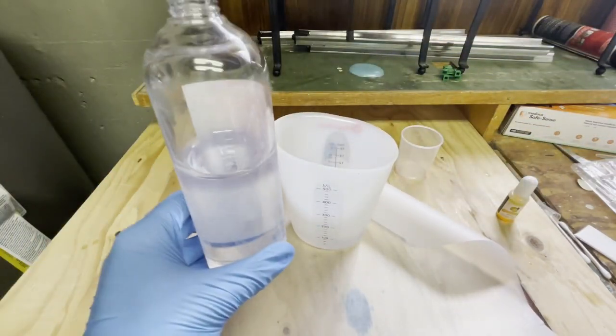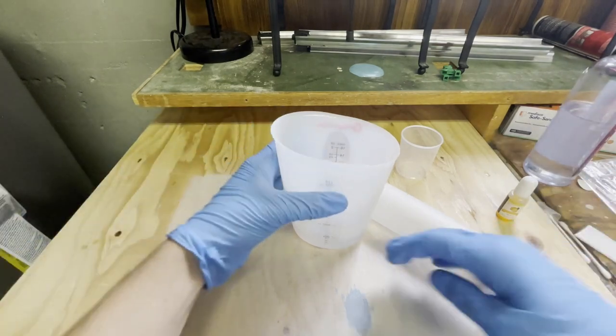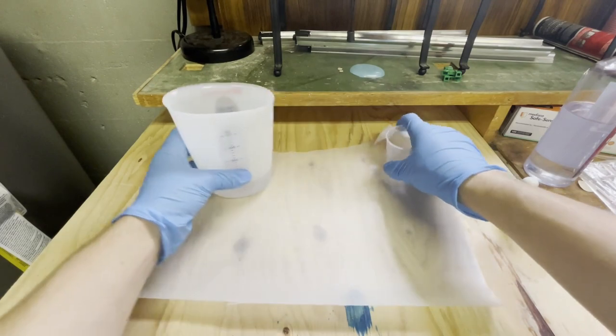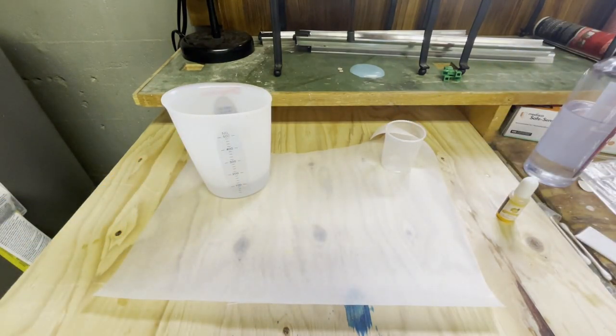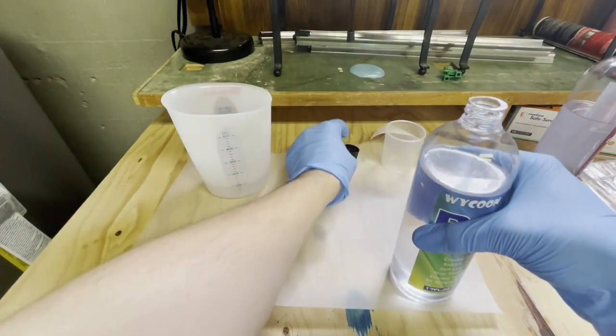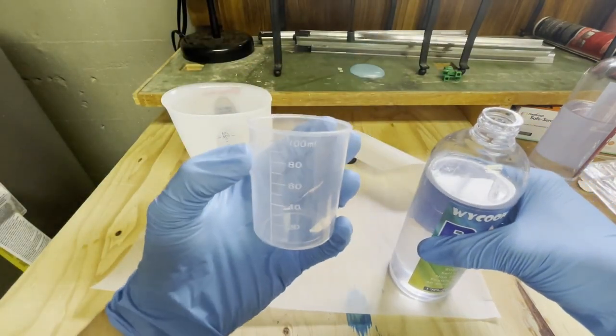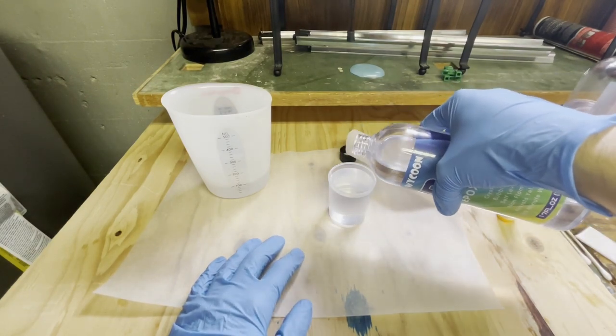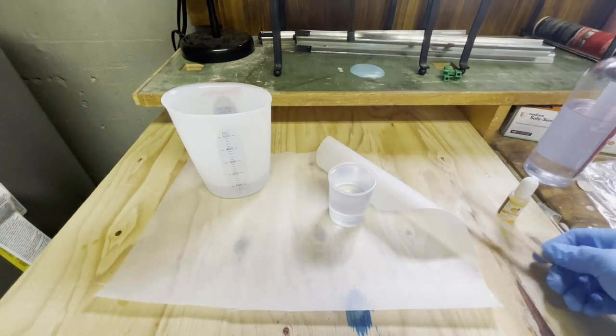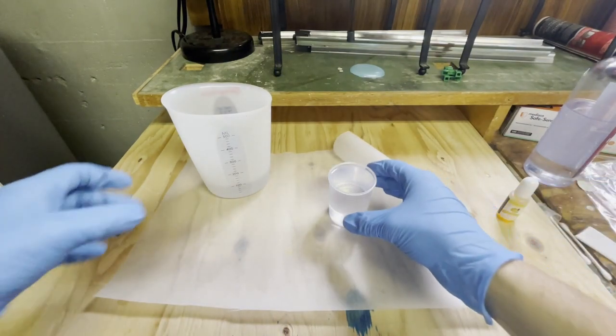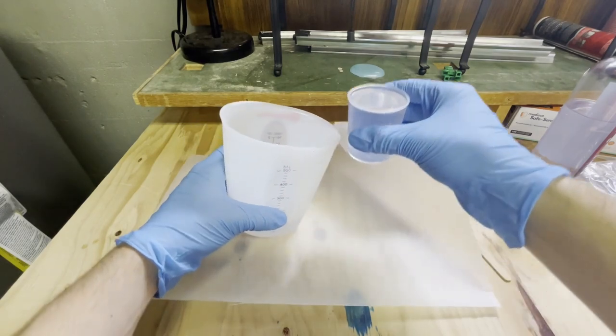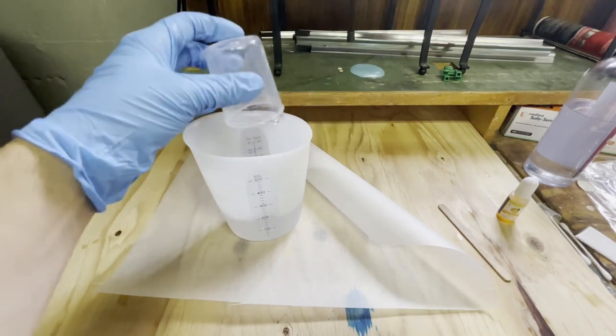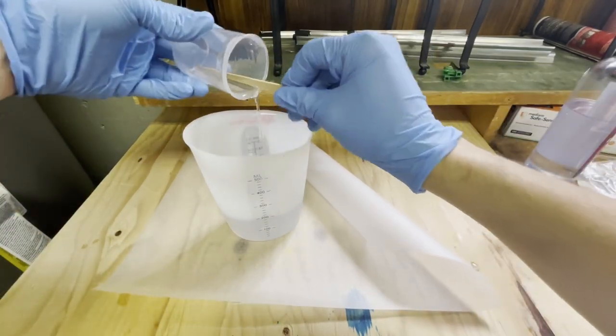Now that the A side is poured we're going to move on to the B side. Just like the A side we're going to be pouring 100 milliliters into this little container. And now it's time to mix. To mix it we'll be pouring the thinner B side into the A side, which would make things a lot easier. We're just going to empty that out using the stir stick to clean out the sides.